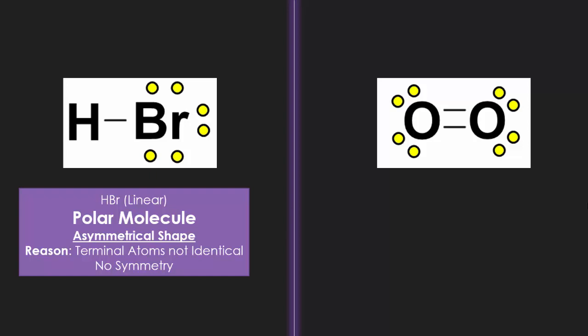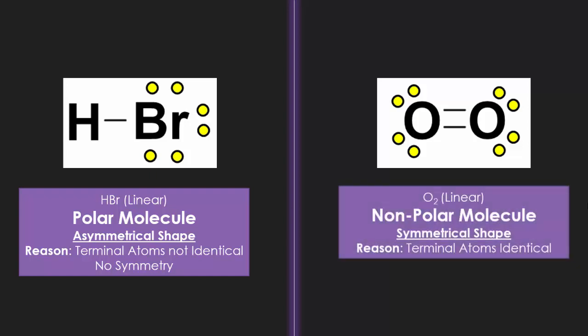However, when you look at O2, it as well is a linear shape. It appears to be a nonpolar molecule because of the fact that the terminal atoms are identical. And, if you were to cut this model right in half, it's symmetrical on both sides.